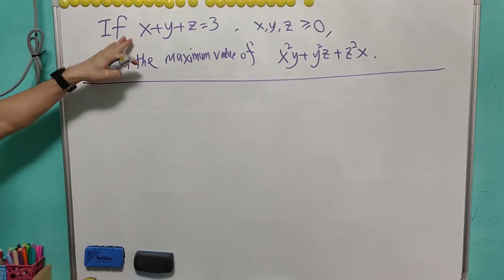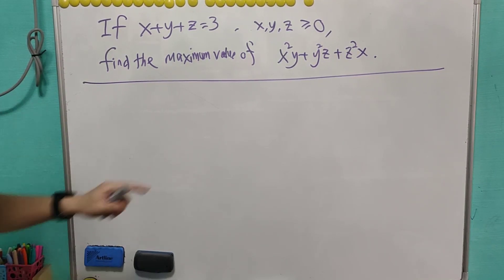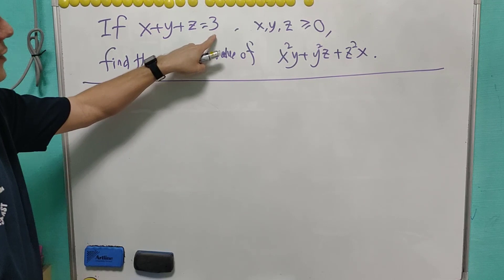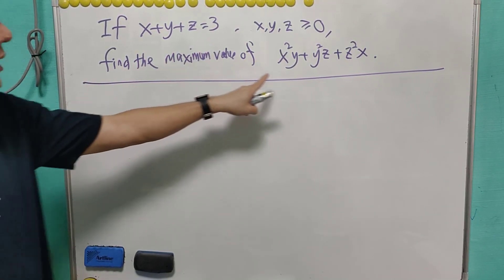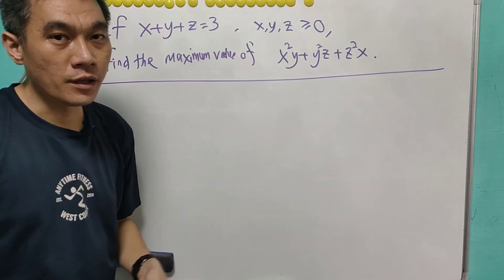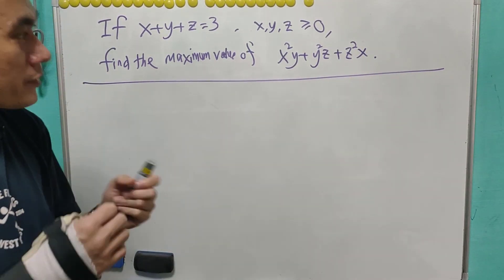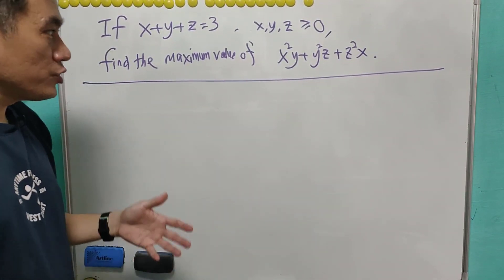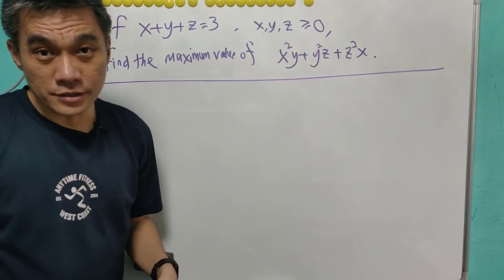For most people, when they have this question, they'll think that the maximum value will happen when x equals y equals z, and in this case equals 1, and therefore the maximum value equals 3. So they just try to find out how to prove that the maximum value is 3.